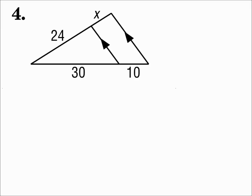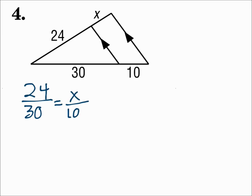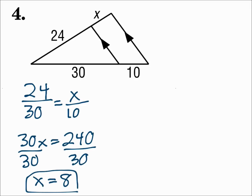Number 4. Here we have a segment in the middle that's parallel to the third side, so it cuts those two sides into proportional parts. This time the triangle is tipped over on its edge, but the proportion can still be set up based on the way the numbers are sitting in the picture. On the left we have 24 over 30, and on the right we have x over 10, just how it sits in the picture. Cross multiply to solve, and x is 8. It doesn't matter how the triangle is standing — it can be rotated any way, and you can still set up the proportion based on the way the numbers sit in the picture.